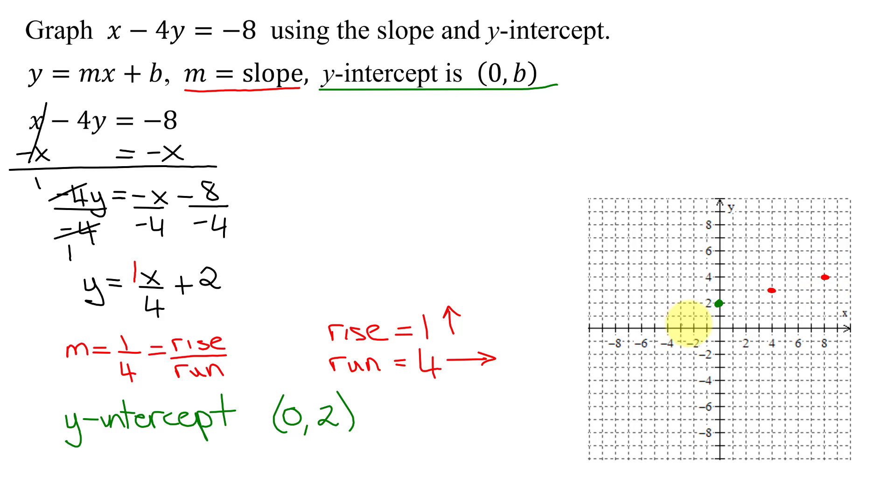And if you wanted to graph a point on the left, you reverse both of these. You will go down and to the left. So starting at the y-intercept, go down 1 and to the left 1, 2, 3, 4. So those are plenty of points to graph my line.